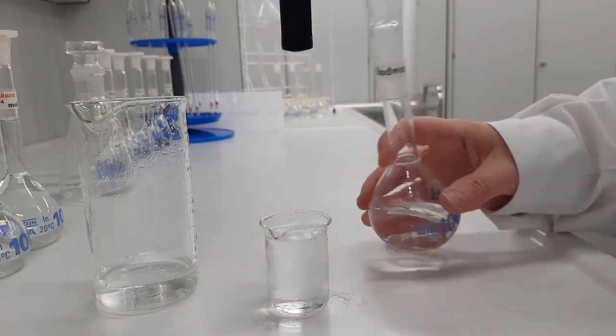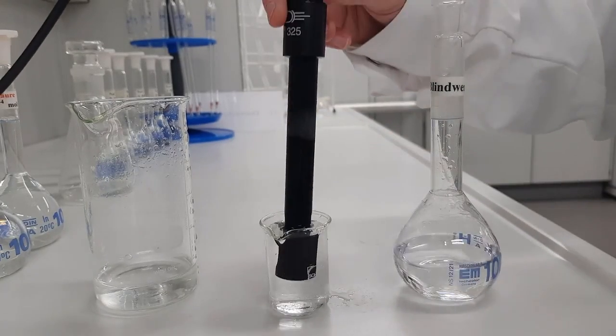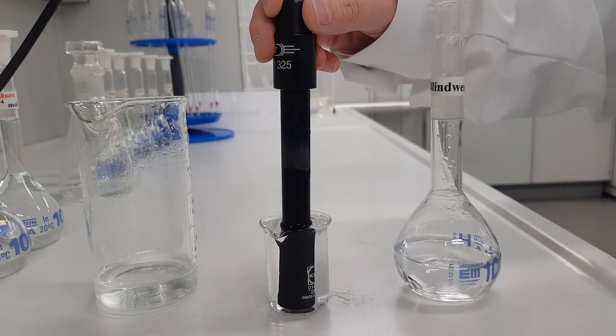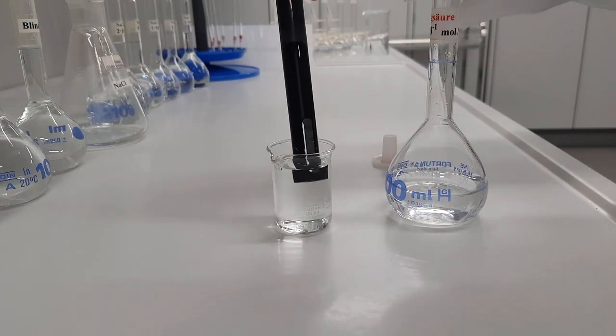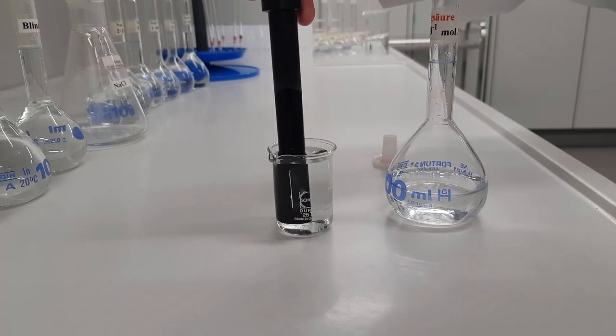When changing from acetic acid to sodium chloride, rinse the electrode repeatedly with distilled water until the conductometer indicates the original conductivity of the blank sample.